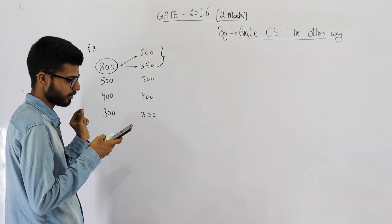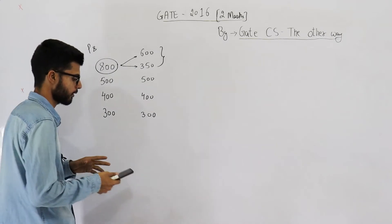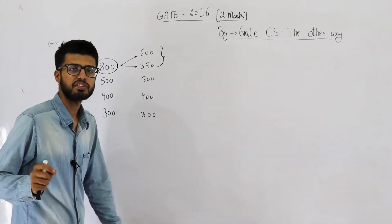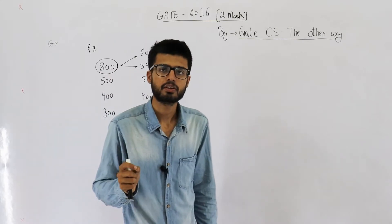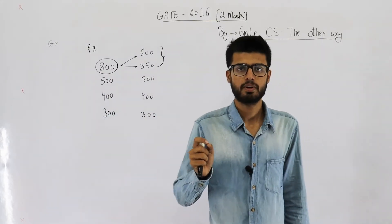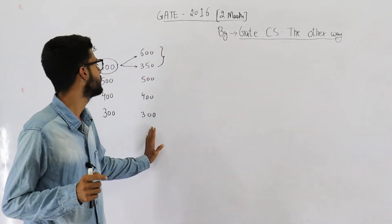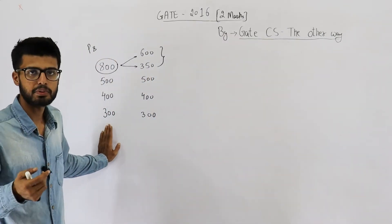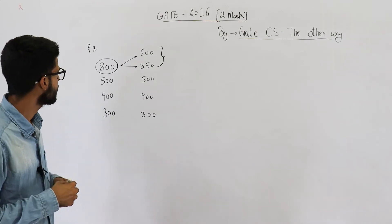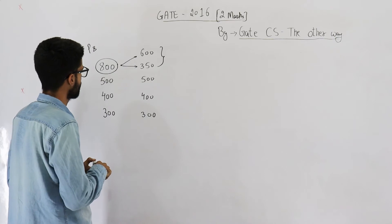The question asks: the throughput increase of the pipeline is blank percent. Throughput means the number of instructions processed per unit time. So we need to find how many instructions both pipelines complete in a given amount of time. For that, let's first find the clock period.